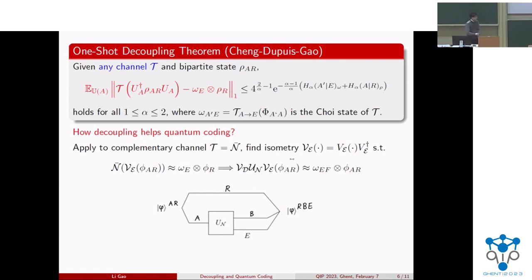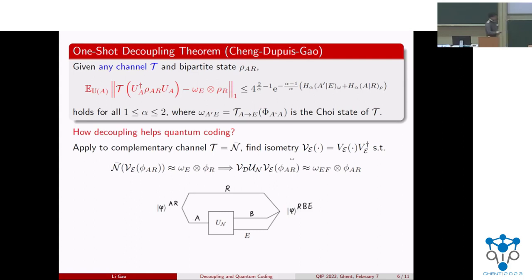I was curious about decoupling in the context of the convex split lemma — you can kind of see that as some form of decoupling. Can your proof techniques be extended to the setting of the convex split lemma? Our proof does extend to convex splitting. We still think decoupling is more general — you can formulate convex splitting as a special case of decoupling with a slight model change. But in decoupling we consider the fully quantum setting, while convex splitting still has some classical component.